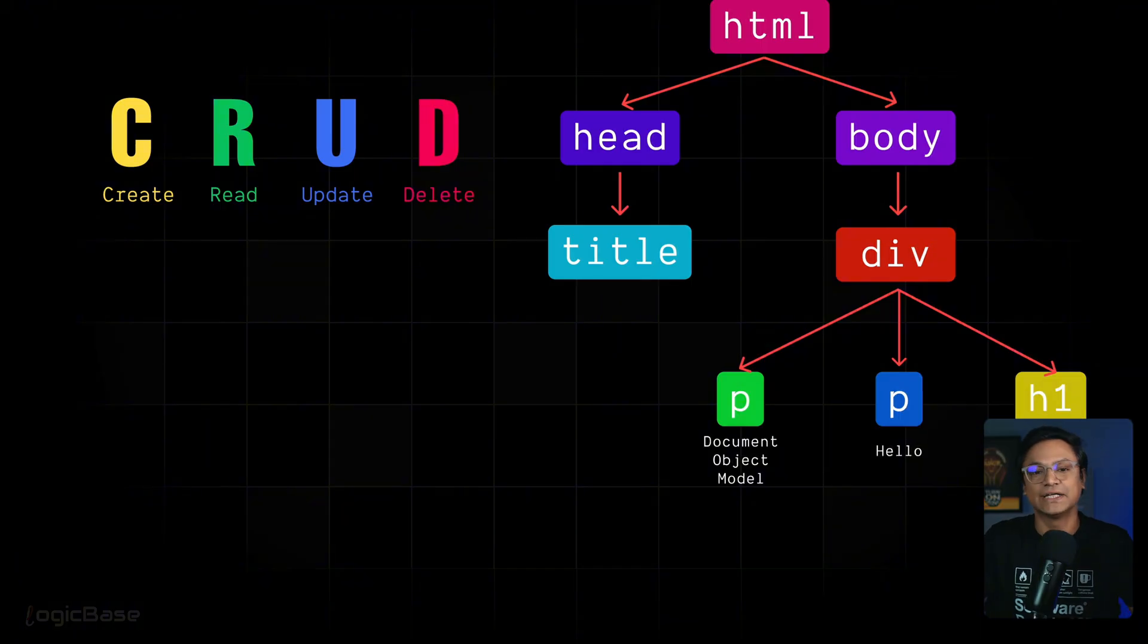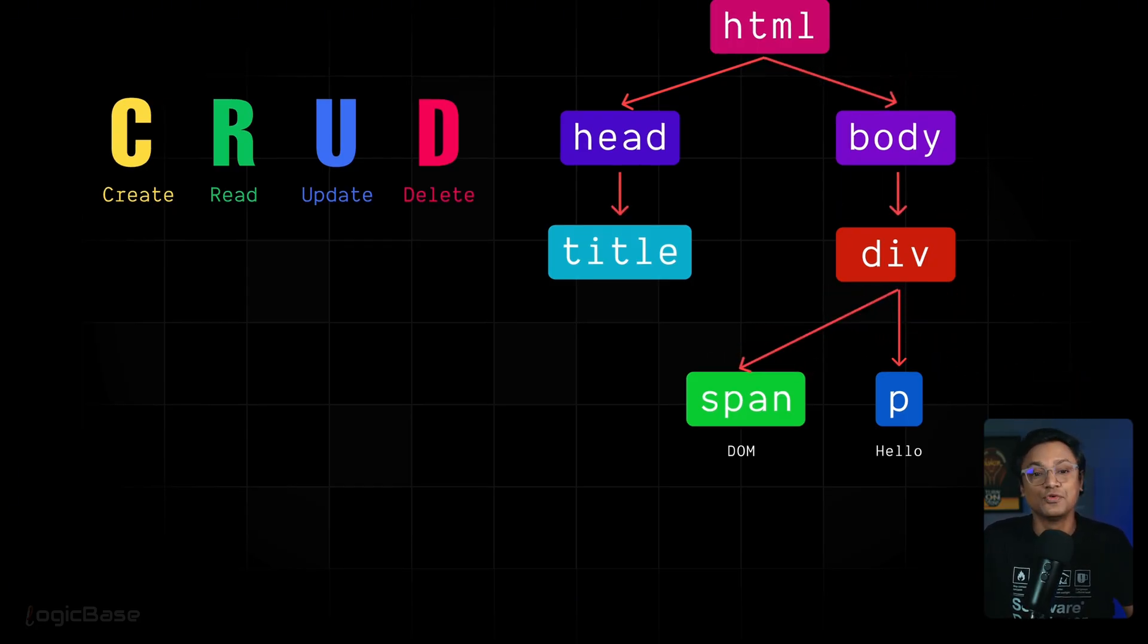Then comes U, which stands for update. Let's say the value of a p element was document object model. We can update it to just DOM. We can even change the type of an element. For instance, update a p element and turn it into a span. You get the idea, right? We can also delete an element entirely if we want. For example, the h1 tag I just removed, that shows we have full control, right?